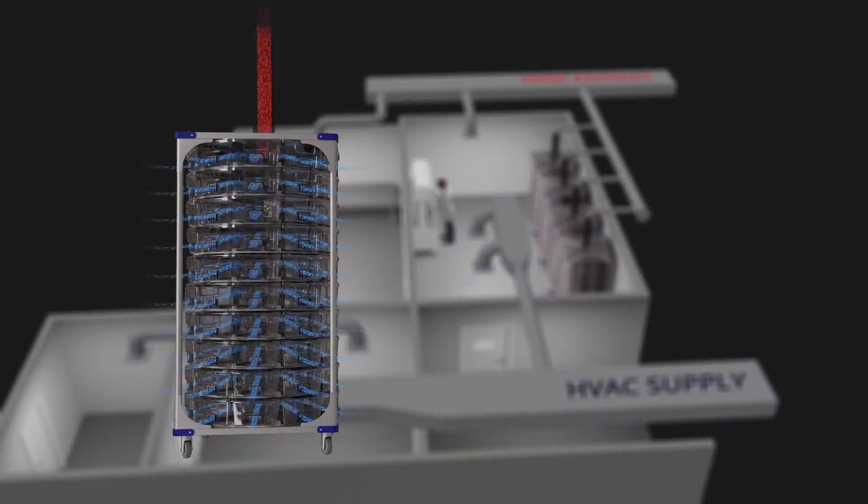Here is a close-up look of the Animal Care System's rack and how the air travels into the rack and cages.